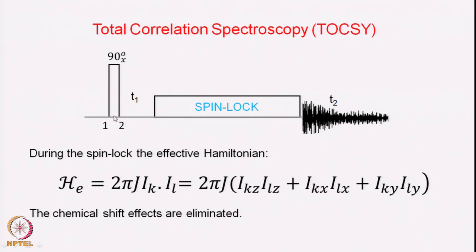The pulse sequence is very simple. You have the 90-degree pulse as the excitation pulse — magnetization is excited and it evolves for the period T1, and after that the magnetization is locked. The magnetization is in the transverse plane when you apply the 90x pulse, so you get magnetization in the y-axis. You then apply a spin lock along the x or y axis, and the entire magnetization is locked along that axis. The spin lock consists of several pulses; there are many different schemes for spin locking. During this period the chemical shift evolution is completely removed — the Zeeman Hamiltonian is completely removed — and the only Hamiltonian present is the coupling Hamiltonian.